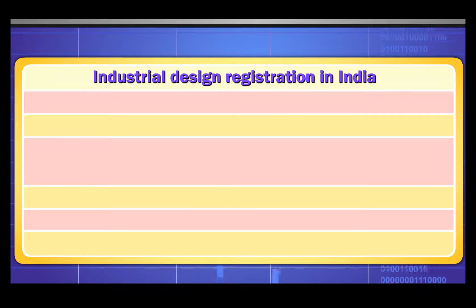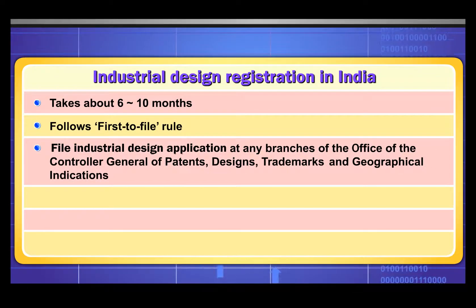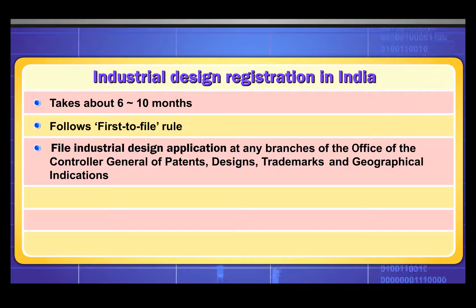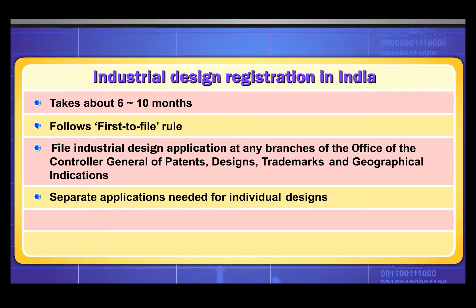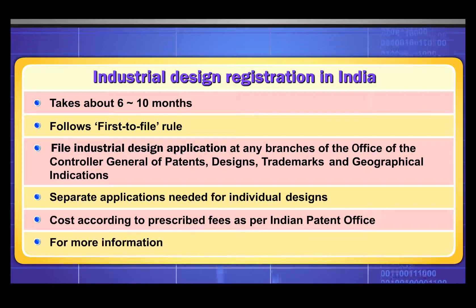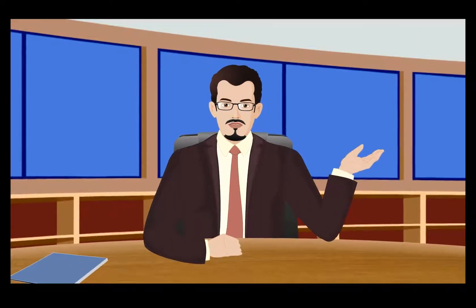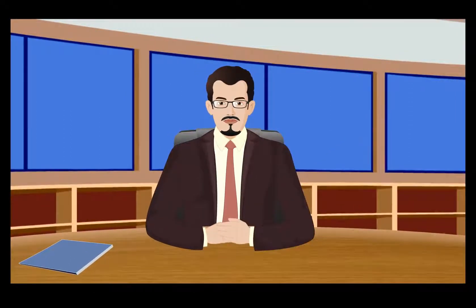Industrial design registration in India takes about six to ten months and follows a first-to-file rule. File the industrial design application at any branch of the Office of the Controller General of Patents, Designs, Trademarks and Geographical Indications. Separate applications are needed for individual designs. Cost is according to prescribed fees as per the Indian Patent Office. For more information, visit www.ipindia.nic.in.